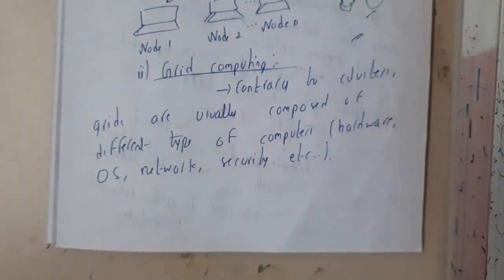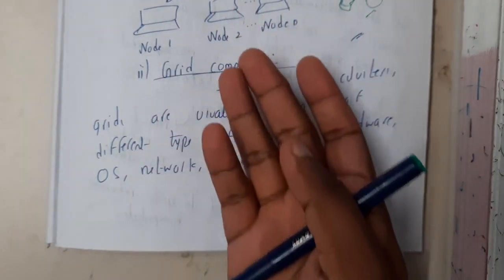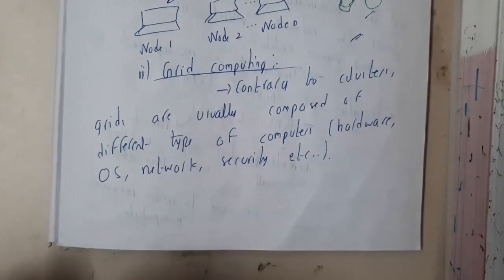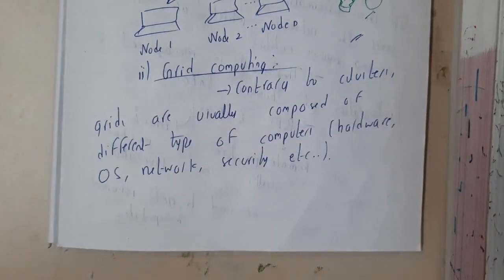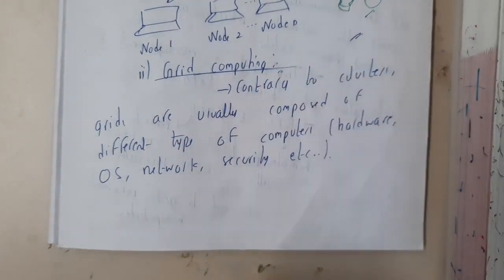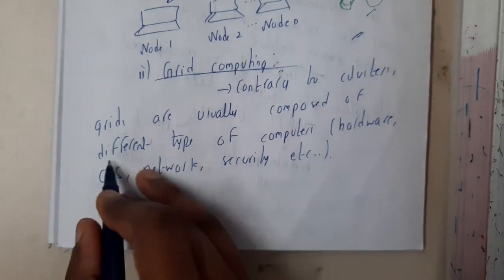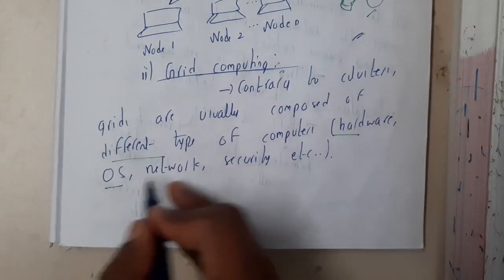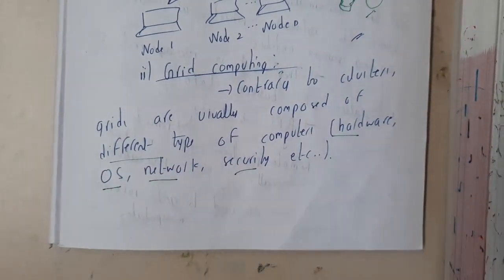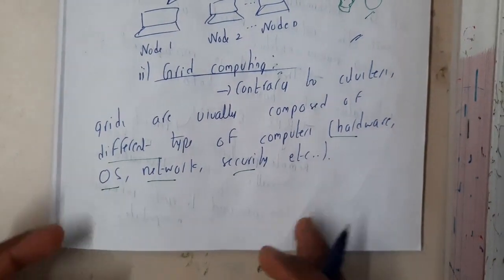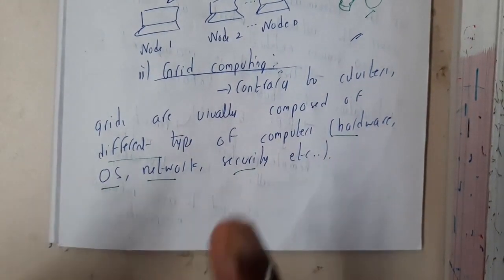Similarly, grid computing removes the disadvantage of cluster computing. In grid computing you can use different types of hardware, software, network security, and all those things can be different. That is the major advantage of grid computing. You can draw the same diagram as cluster computing for reference.